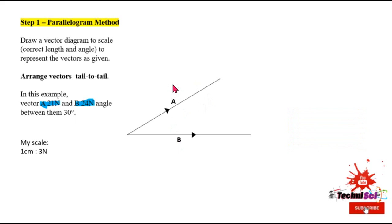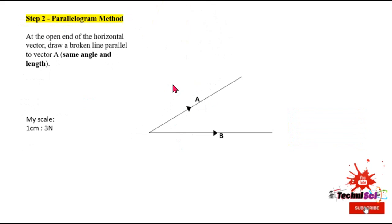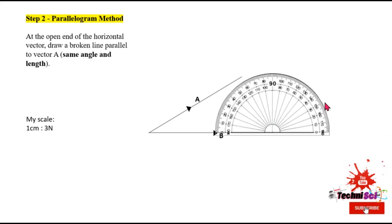Let's now go to step two. Step two says at the open end of the horizontal vector, that would be this one, we are going to be drawing a broken line parallel to vector A. And once it's parallel, it's the same angle, but we also need to ensure that it's the same length. Because if you remember anything about parallelograms, it has opposite sides that are equal, equal in angle and equal in length. So let's do that now. So bring in my protractor, I'm going to measure my angle and there I drew my line at 30 degrees.